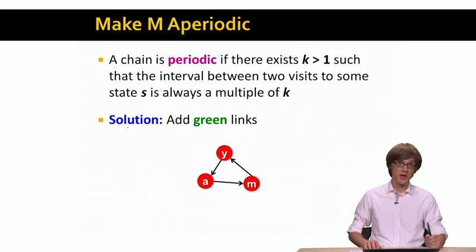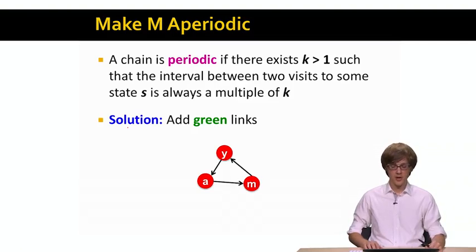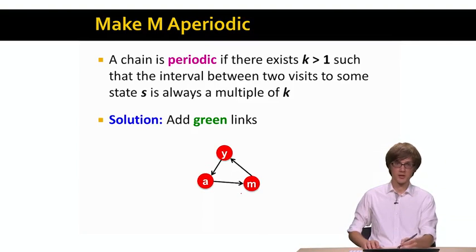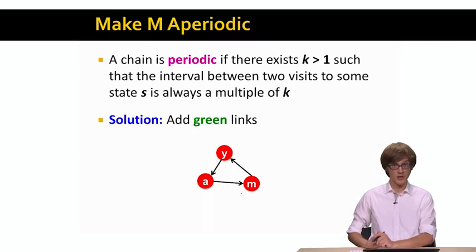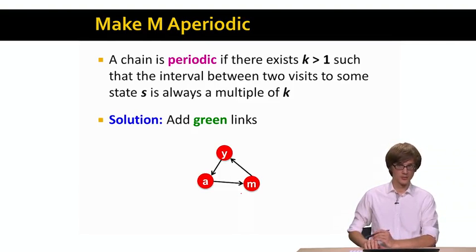The second property is that M has to be aperiodic. We say that a chain is periodic if there exists some value k such that the interval between two visits to some state s is always a multiple of k. So for example, if we were to have a graph on three nodes with a directed cycle as I have it here. Then for example, this would be a periodic chain because the random walk here is deterministic. And every two steps we return back to the same node.